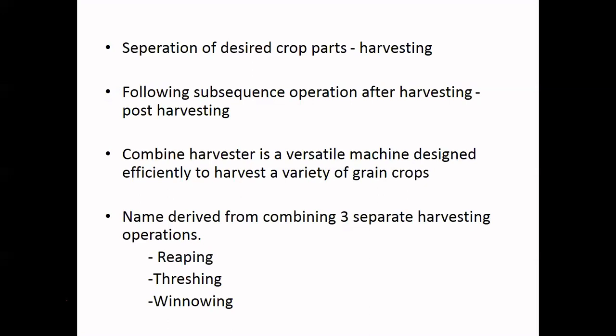The combine harvester is a versatile machine designed efficiently to harvest a variety of grain crops. You can change the threshing drum to use it on different crops. The five activities are: reaping, cutting, threshing, winnowing, and sorting. Winnowing is aerodynamic sorting. Other sorting methods include color sorting, size sorting, shape sorting, and weight-based sorting - aerodynamic sorting is the mechanical method using a high-velocity fan.